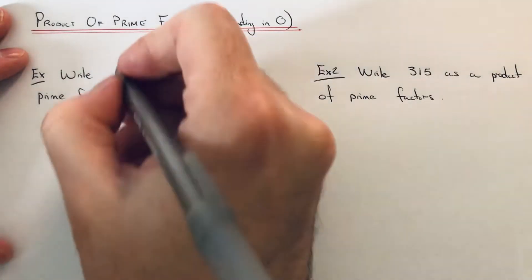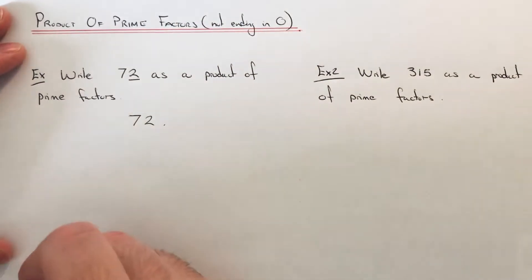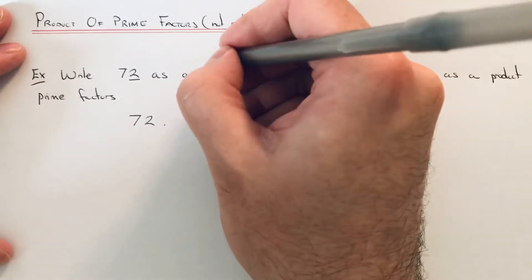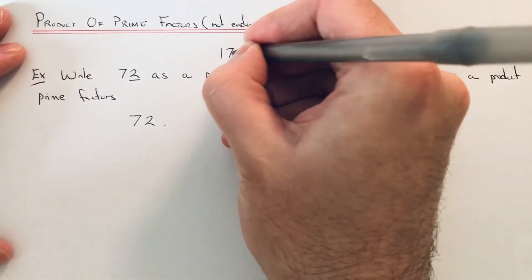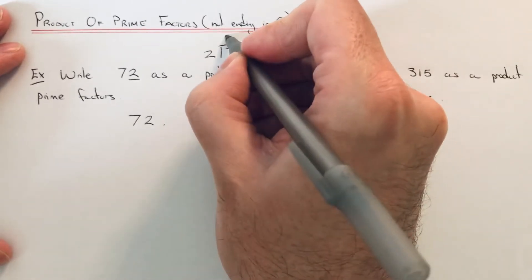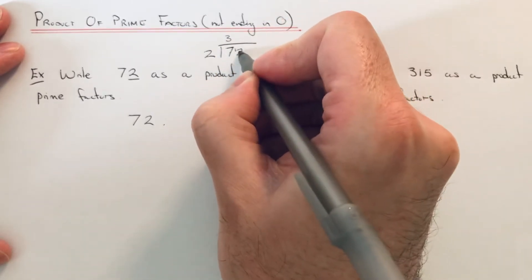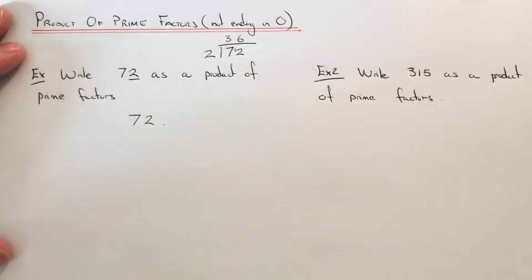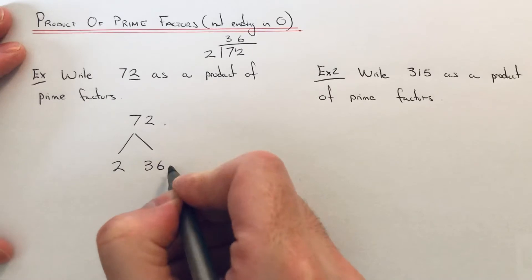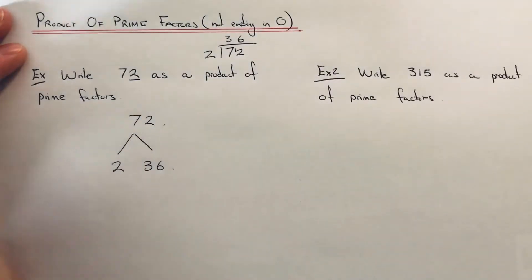Now I know 72 is in the two times table because it ends in a 2. So if I just work out 72 divided by 2 on the side of my page: 7 divided by 2 is 3 remainder 1, 12 divided by 2 is 6. So 2 times 36 is 72.